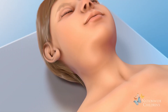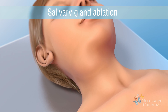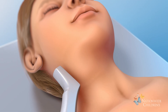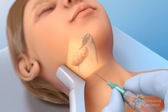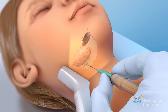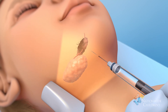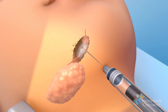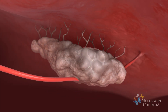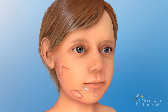A new interventional radiology treatment for ranulas, called salivary gland ablation, involves injecting medicine into the injured salivary gland to help the gland heal. First, ultrasound imaging is used to guide placement of a needle into the ranula. Fluid is drained from the ranula through the needle, then imaging is used to guide injection of absolute alcohol into the abnormal salivary gland. The gland then makes much less saliva and gets smaller. The injured gland heals and stops leaking saliva, and the ranula is gone.